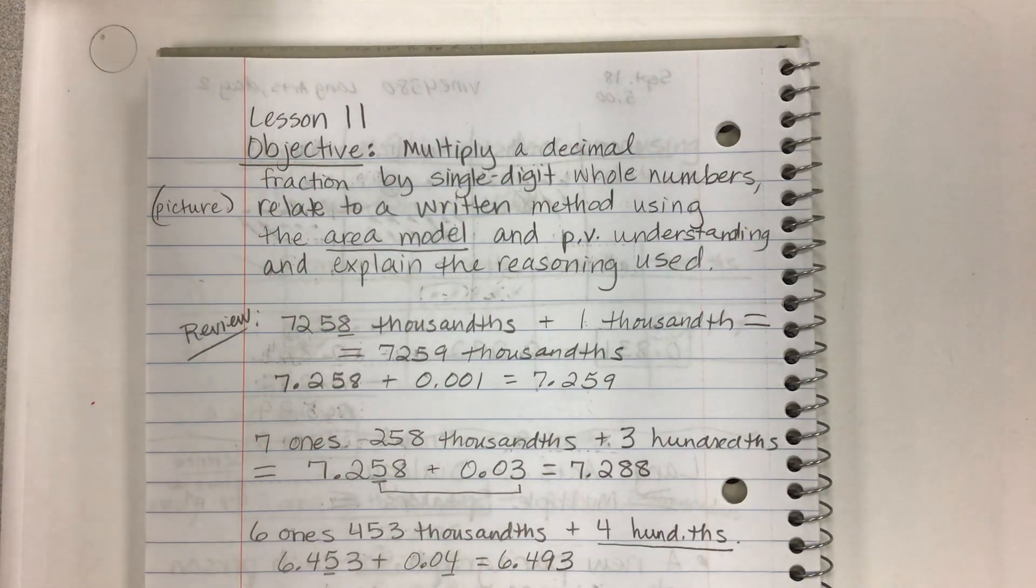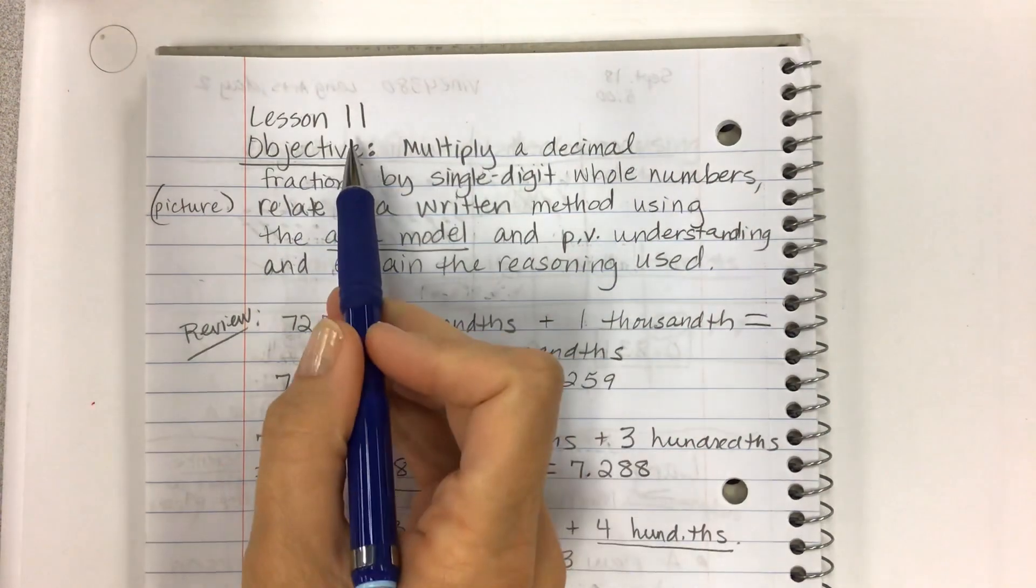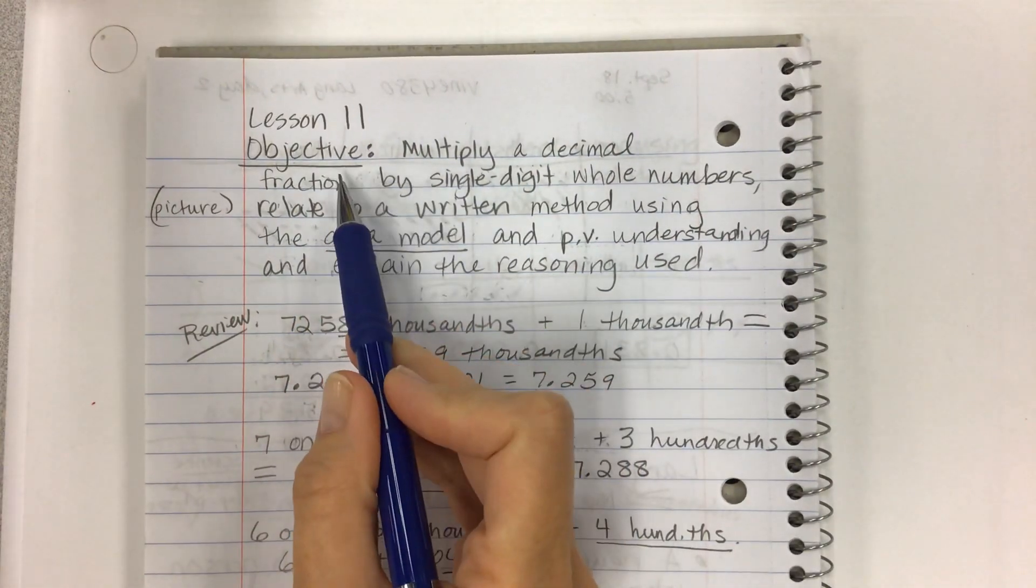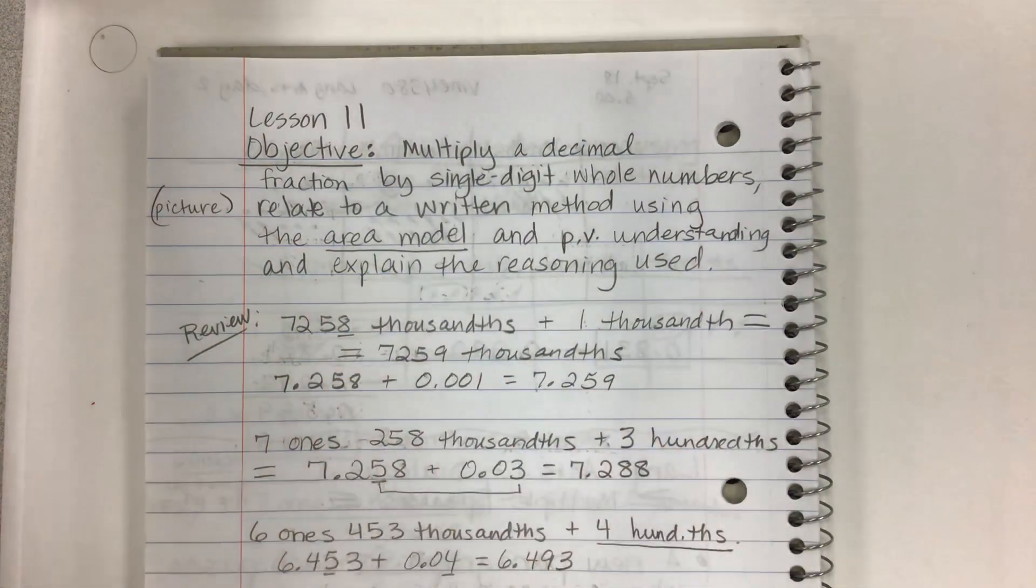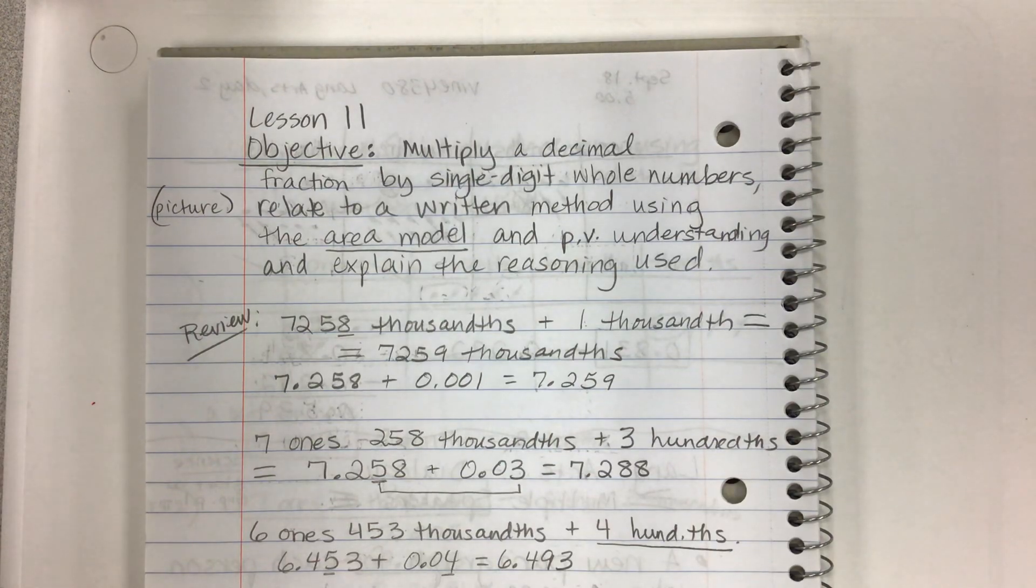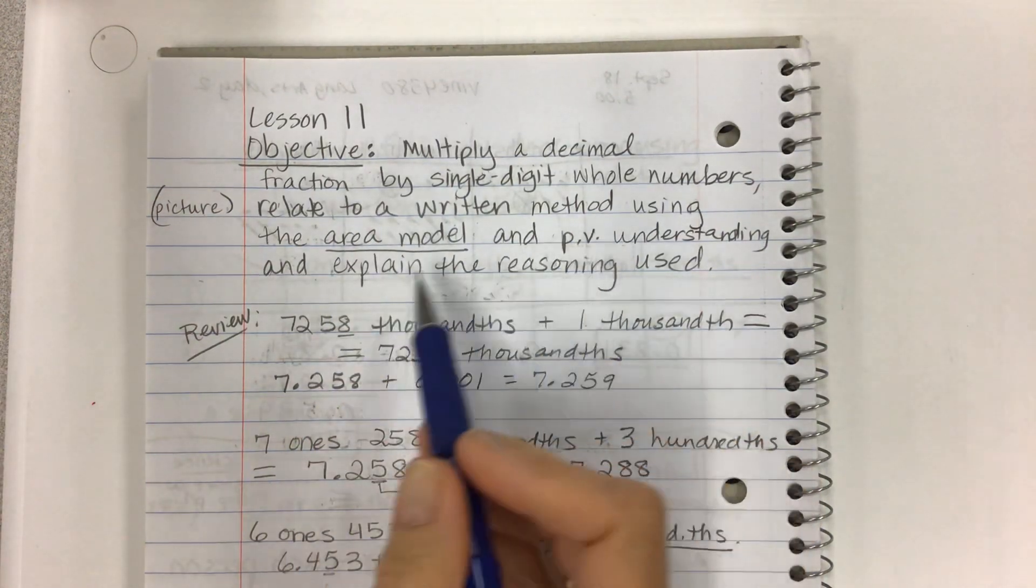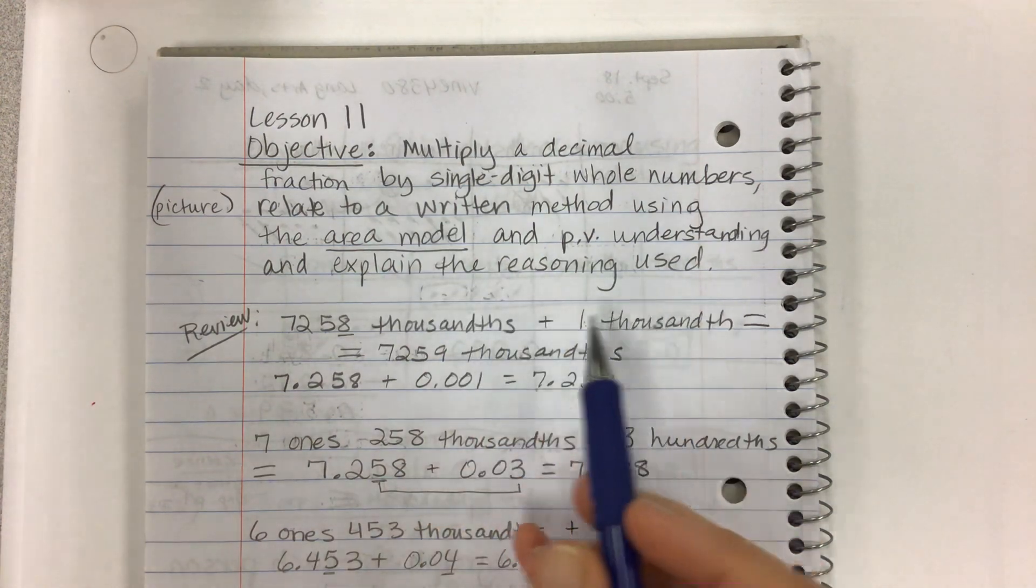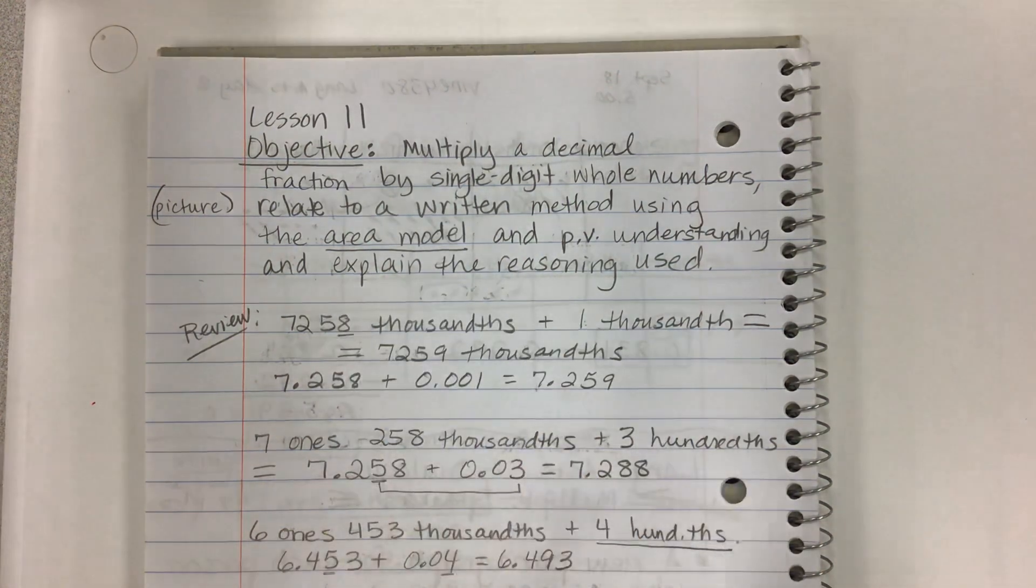Hi kids! This is lesson 11 for Eureka Math and the objective is multiply a decimal fraction by single digit whole numbers and then relate to a written method using the area model and place value understanding and then explain the reasoning used.